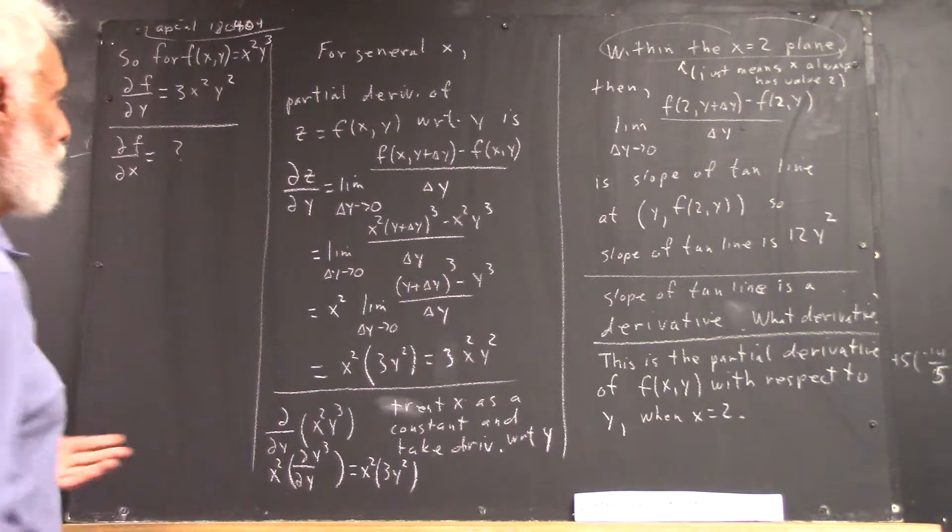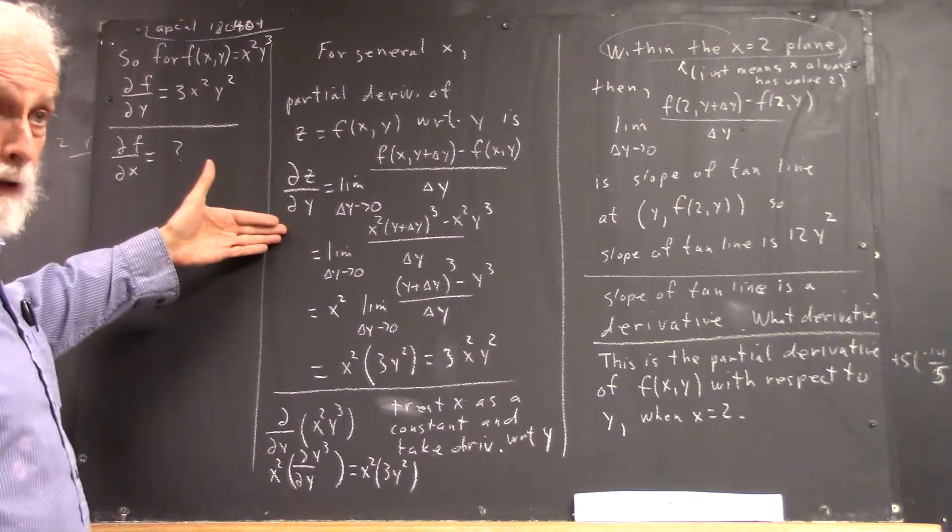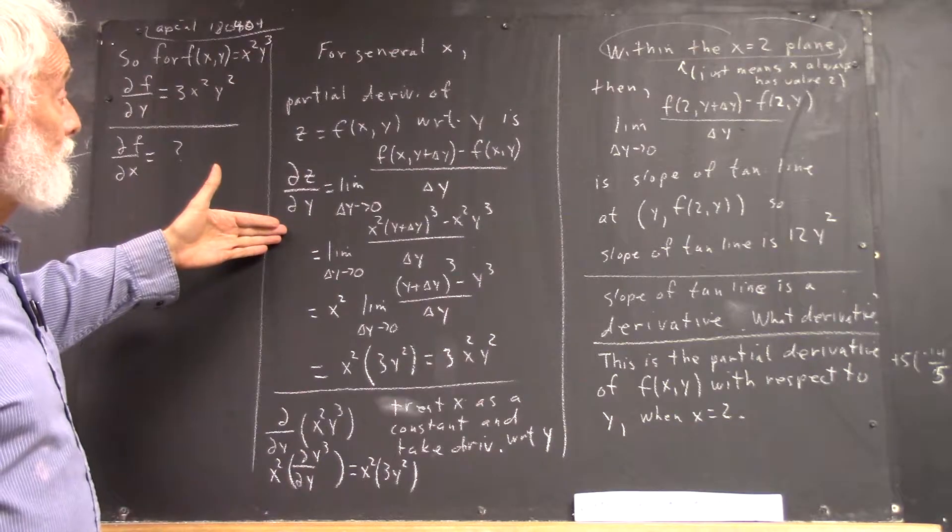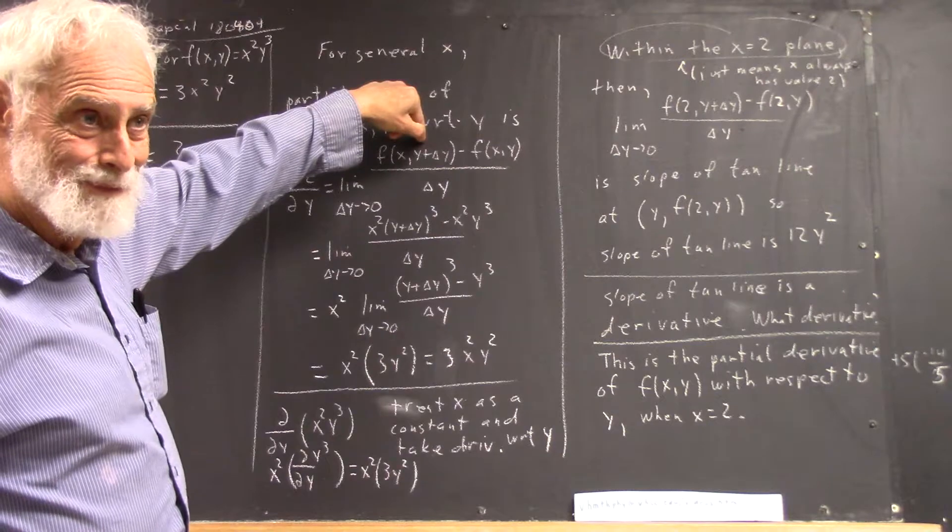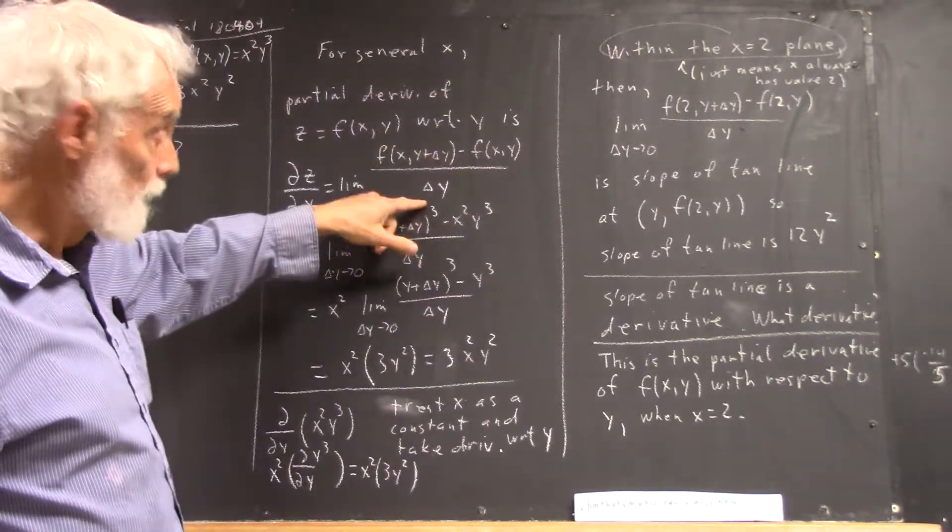Okay, now I haven't written it all out. I could write the partial of z with respect to x. It'd be f of x plus delta x, y, minus f of x, y over delta x, right?